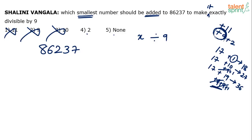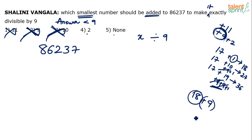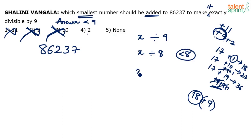So 11 cannot be the answer because 11 is like adding one more 9. Similarly, 10 cannot be the answer. The answer here should be less than 9 — it cannot be equal to 9 either. Because if adding 9 makes the number divisible, that means in the current format it is already divisible by 9. So the answer cannot be anything equal to or more than 9. Similarly, for divisibility by 8, the answer should be less than 8; for divisibility by 23, less than 23.